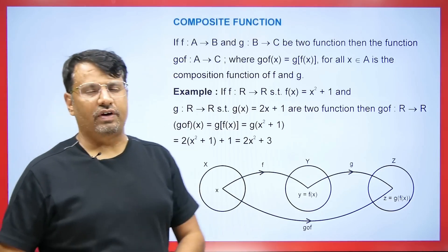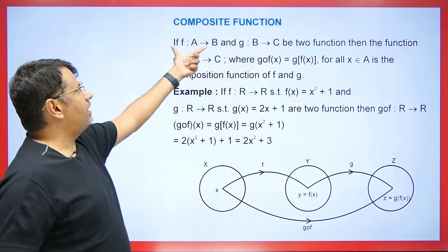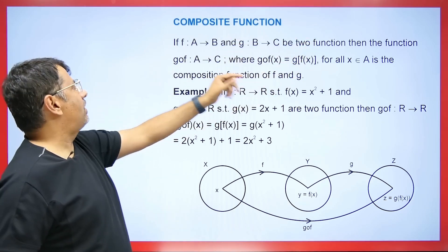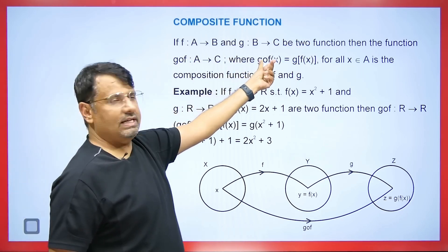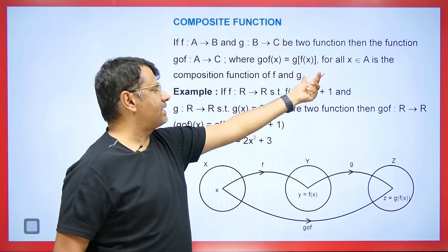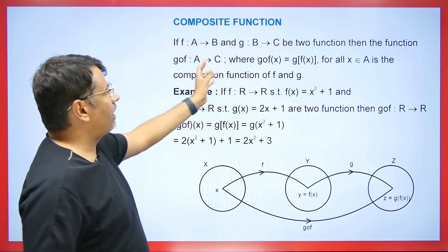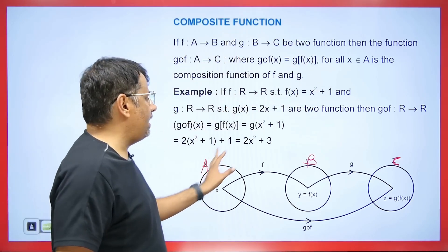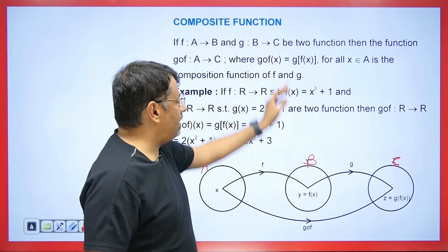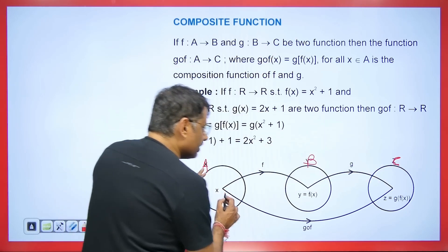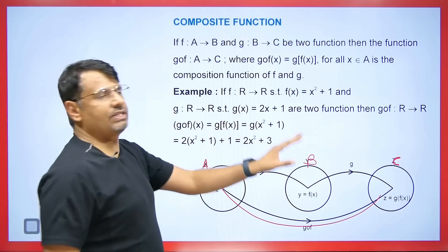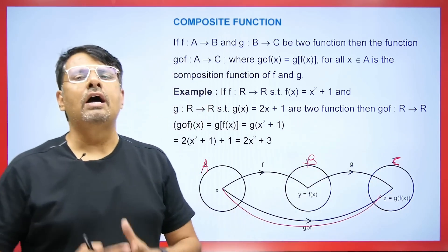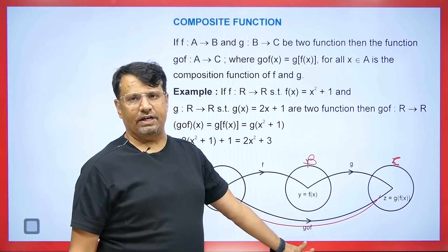Now we'll discuss composition functions. If F is defined from A to B and G is defined from B to C, the function G∘F goes directly from A to C, bypassing B altogether. That function is called the composite function, denoted G∘F.